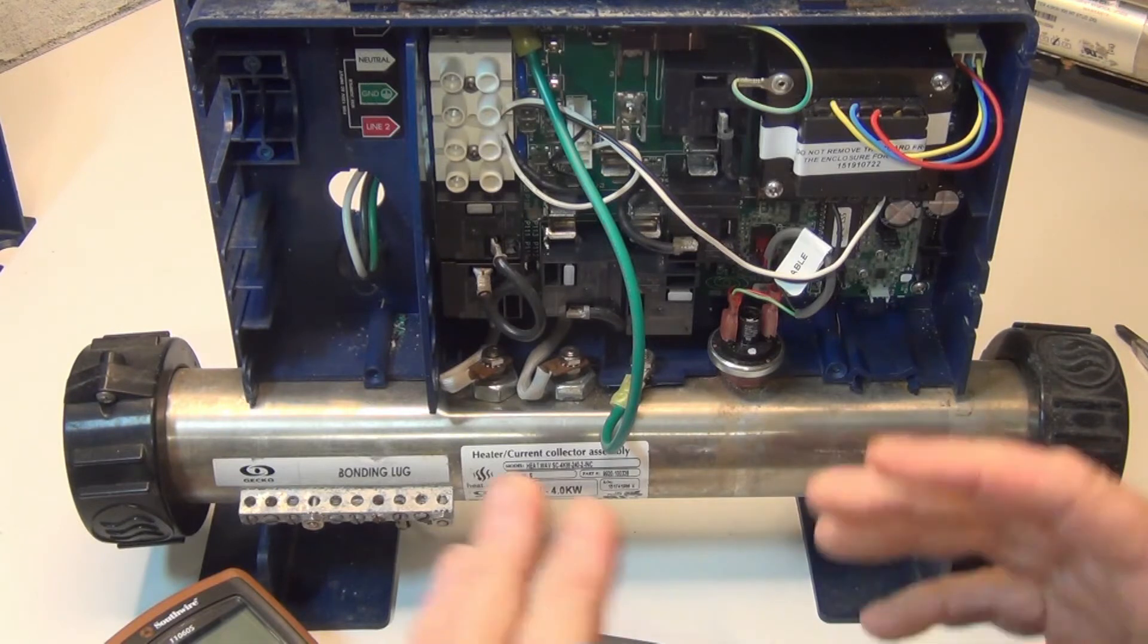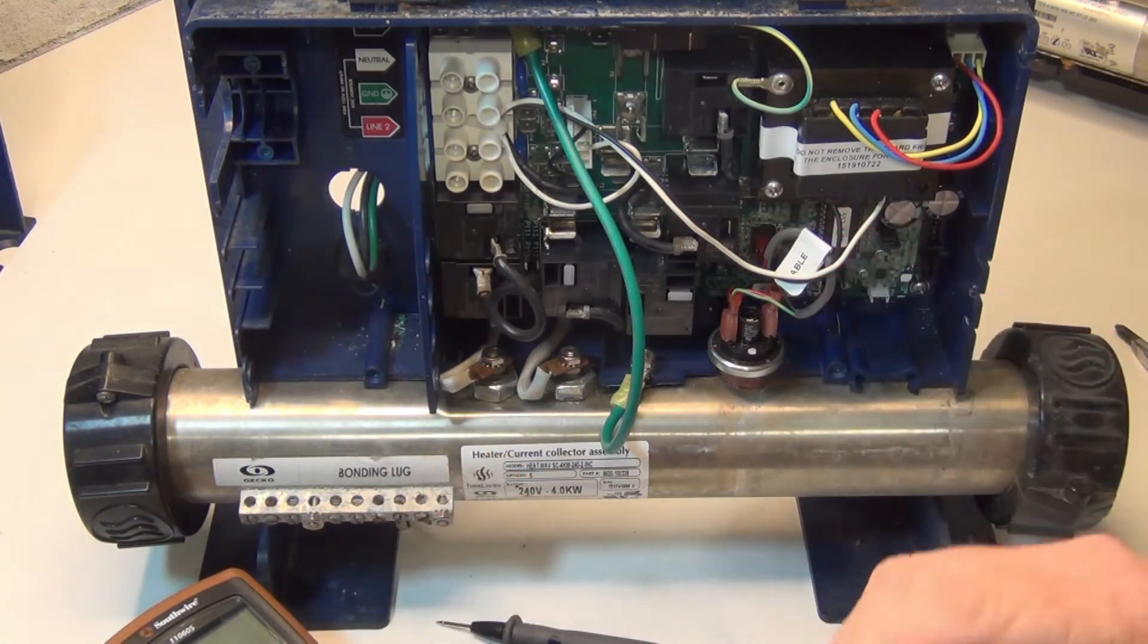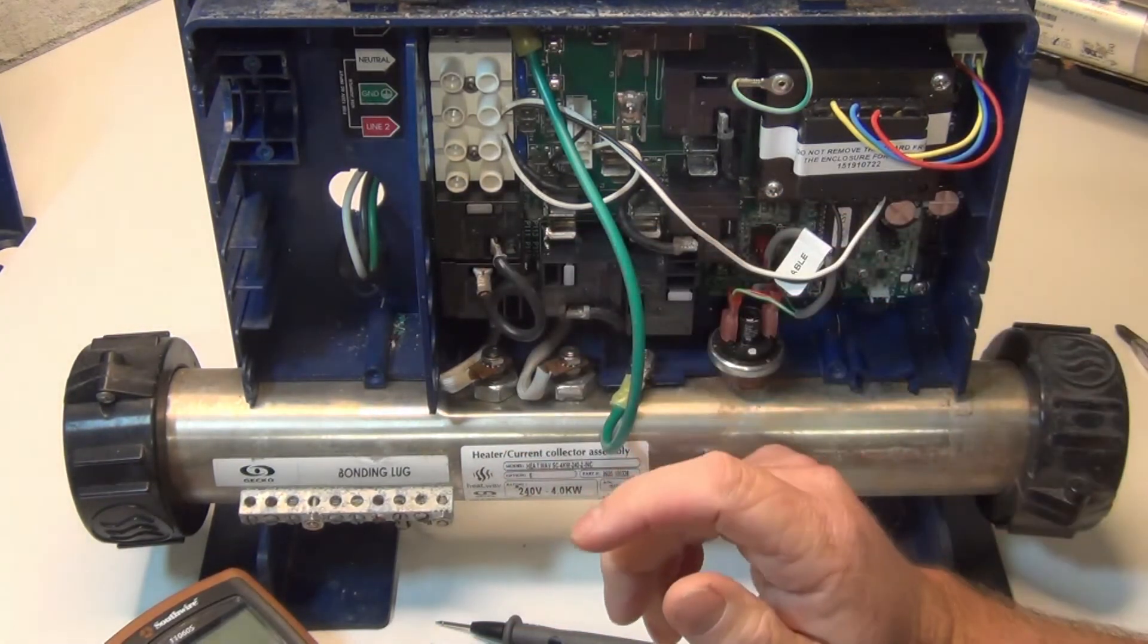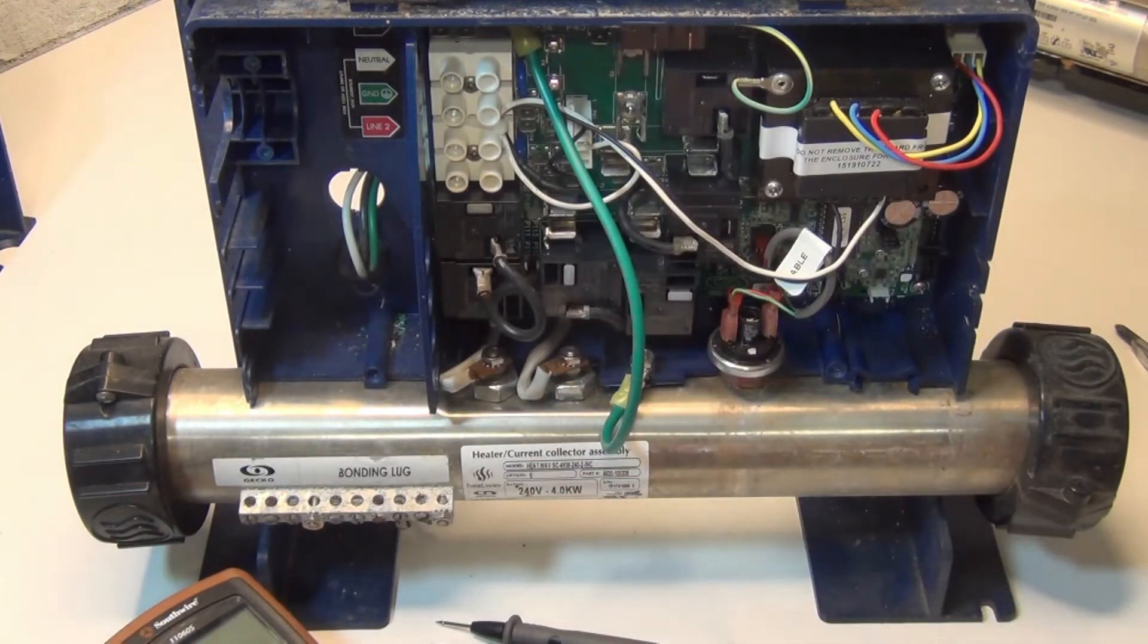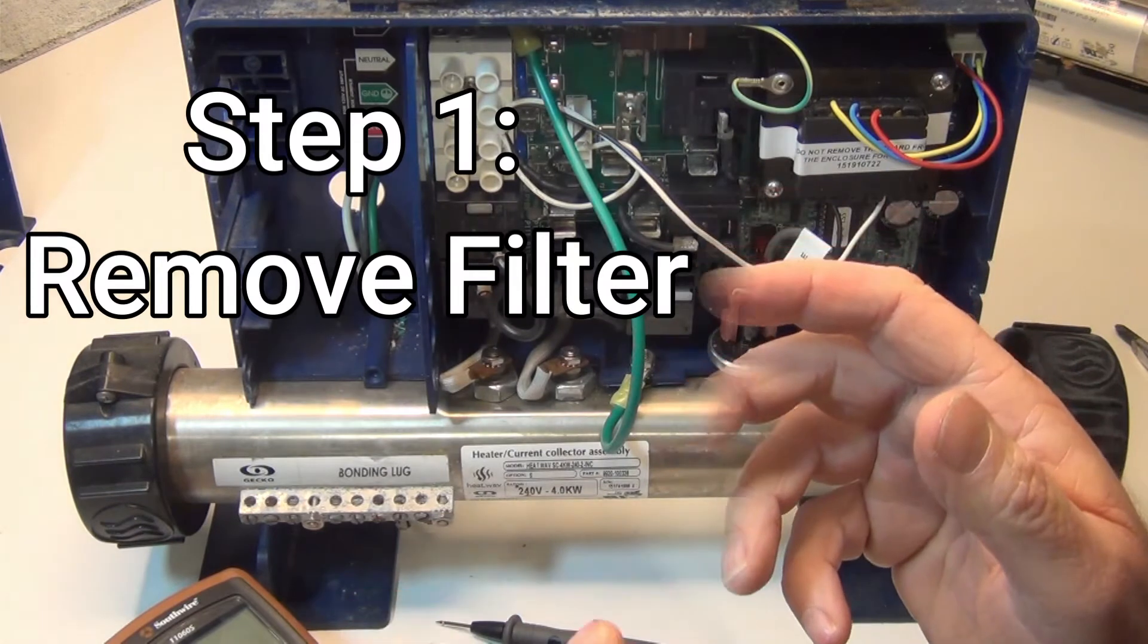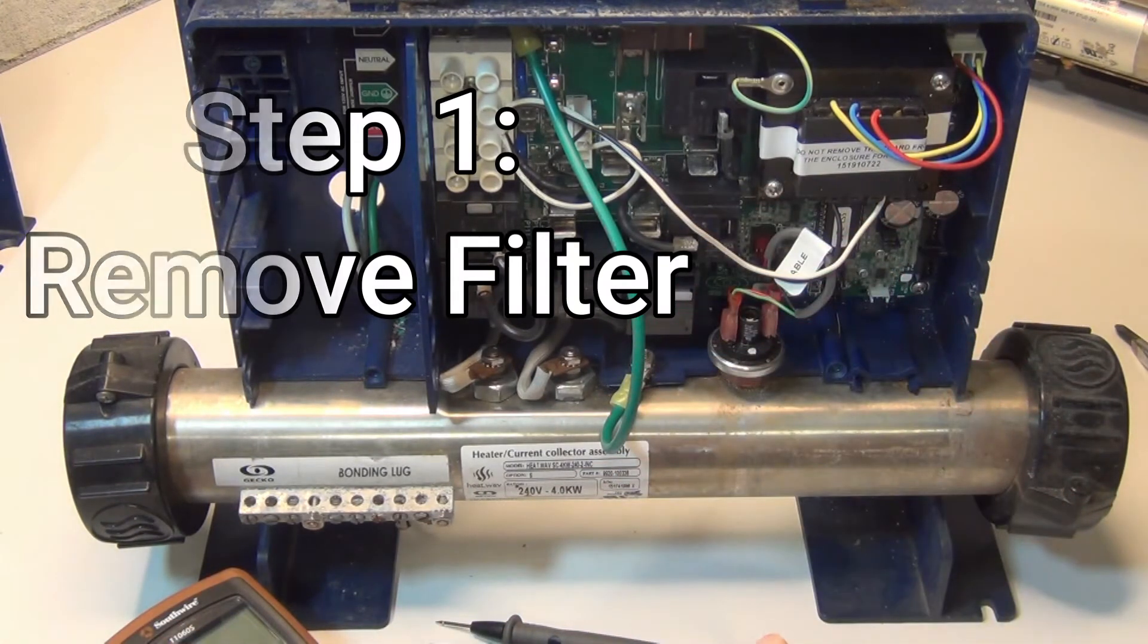Now the first thing you always do for any spa if it's not heating and it's not tripping the breaker, there's no codes or anything like that, or even if there are codes, take your filter out and see if the code goes away or if it starts heating again.